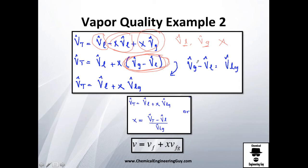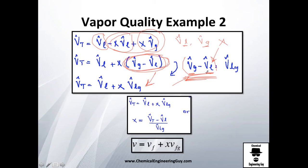In thermodynamics we use a lot the value which is the difference of that property of the gas minus that of the liquid — maybe because it's faster, and many tables include this value. Sometimes tables don't give you the liquid value directly but give you the difference, so you need to do some math. We call this v_fg.